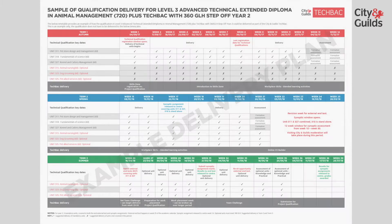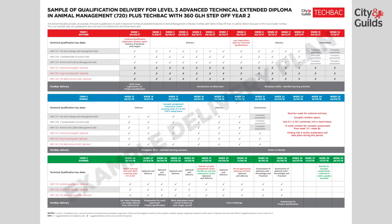For Year 2, in the Autumn term, delivery of the remaining mandatory units is suggested — there are three of them — with formative assessment taking place at the end of that term.